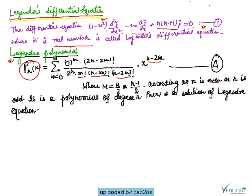It is a polynomial of degree n. Pn(x) is a solution of the Legendre equation. This Legendre equation — Pn(x) is a solution of that differential equation, i.e., the Legendre differential equation of degree n.